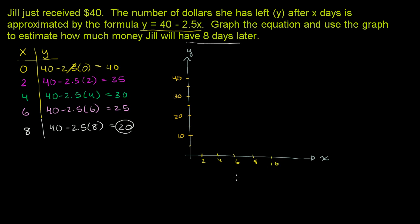After zero days, she has $40. So that's this point right over here. Then after two days, she has $35. So after two days, she has $35. Two in the x-direction, then we go up 35. So that's that point right over there.